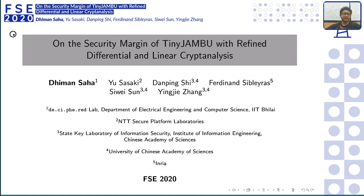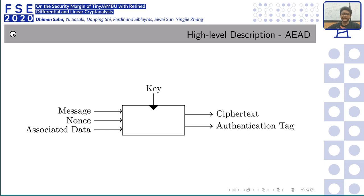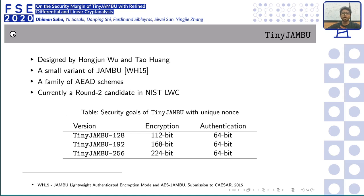TinyJAMBU, as you all know, is one of the submissions to the NIST LWC competition, currently in round 2. It was designed by Hon Joon Hu and Tau Hwang. The predecessor, JamBU, was part of the CAESAR competition, and TinyJAMBU is a small variant of JamBU. It is a family of AEAD schemes with three variants that vary in encryption security, while authentication security is the same across all at a 64-bit level.